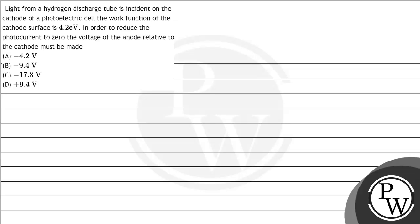Let's read the question. The question here says: a light from a hydrogen discharge tube is incident on the cathode of a photoelectric cell. The work function of the cathode surface is 4.2 eV.